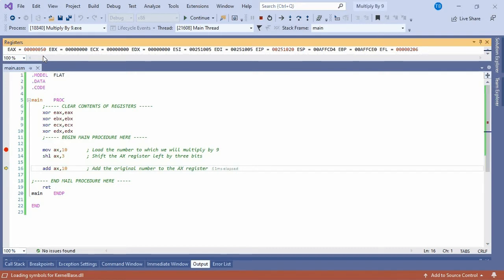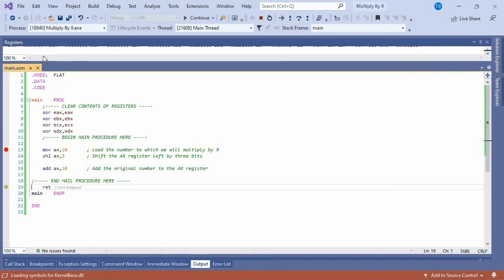Now the only thing left to do is add the original value of 10 to the value currently in the AX register. Once we've done this, we will have multiplied the original value by 9. Press F11 and check out the AX register. You should see 90.